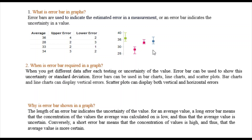Suppose you are doing an experiment and you repeat it multiple times — four, five, or ten times — and every time you get different results. You take an average of all results. For example, the average value is 36. If you tested it 10 times and it sometimes showed 37, sometimes 40, the upper limit is 40, giving an upper error of 4. The lower limit of 34 gives a lower error of 2.